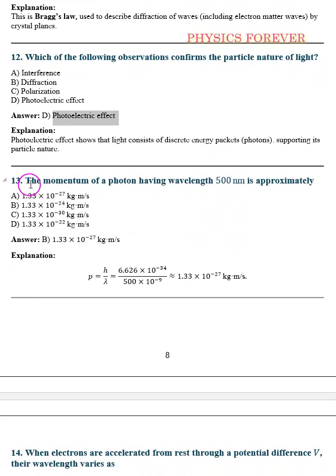Then question number 13. The momentum of a photon having wavelength 500 nanometer is approximately. So already we have to give more than problem related to this type of question.